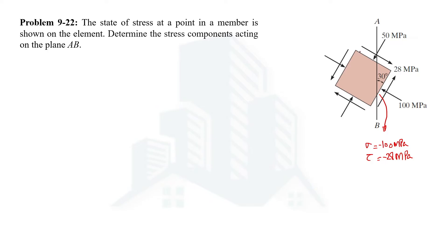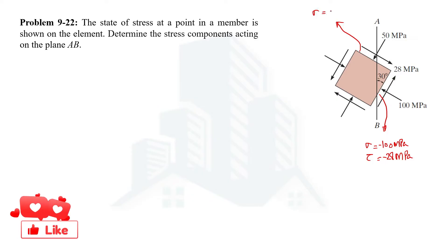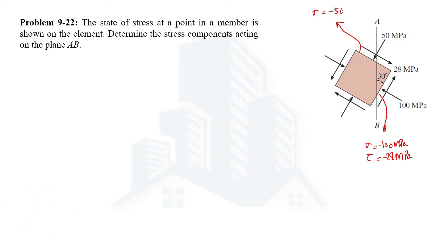At the other plane, we have again normal compressive stress of 50 MPa and the shear stress at this plane is again 28 MPa but clockwise, not anti-clockwise. So let's draw the Mohr's circle.